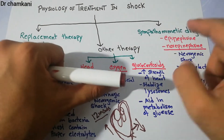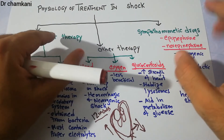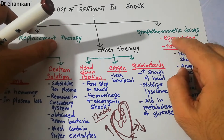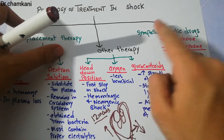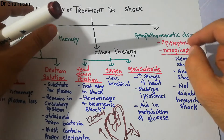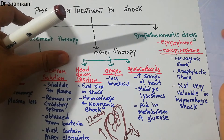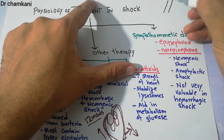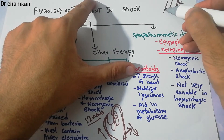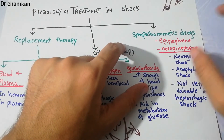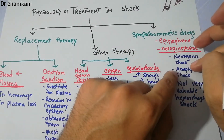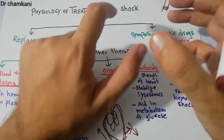Sympathomimetic drugs include epinephrine and norepinephrine. These are the most important sympathomimetic drugs and are most commonly used in neurogenic shock and anaphylactic shock. Because they mimic the sympathetic system, they are used when there is a depressed sympathetic system, which mostly occurs in neurogenic shock. They also cause vasoconstriction, which makes them useful in anaphylactic shock, where histamines cause vasodilation — so they oppose the effects of histamine and cause vasoconstriction, countering the vasodilation.